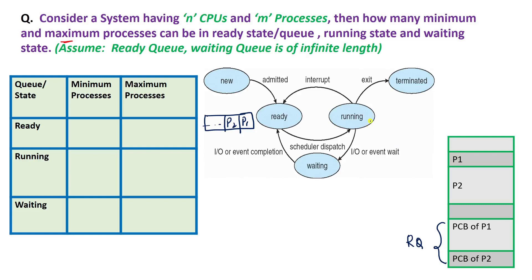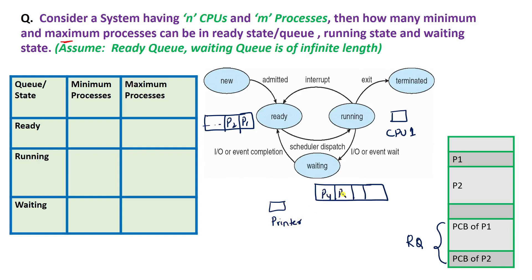Now, if we have only one CPU, then at a time only one process can be executed on that particular CPU. The waiting state can also be represented in the form of a queue. There can be many processes present inside this waiting queue, and they will be waiting for a particular device — for example, a printer. For the printer, processes like P4, P5, and so on will be waiting to access it and use its services. So the waiting state is represented by a waiting queue where many processes reside.